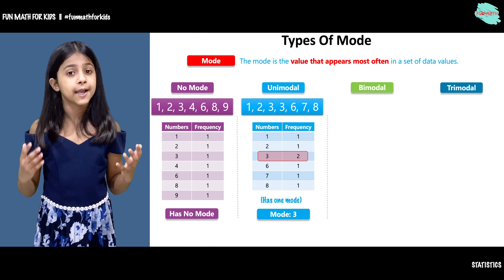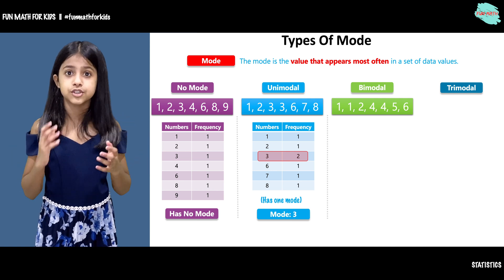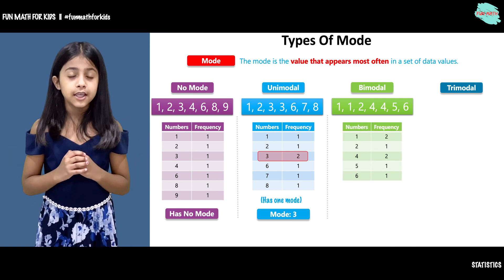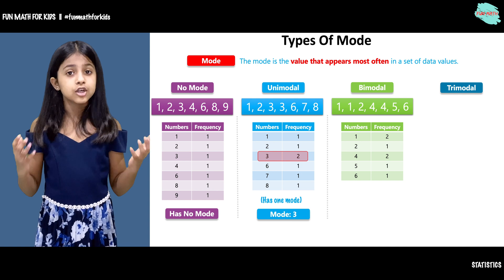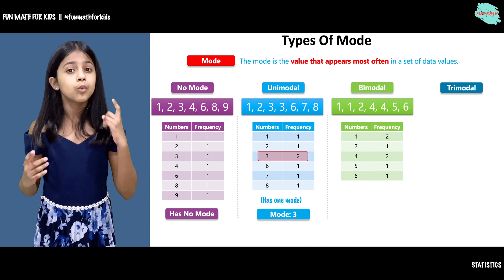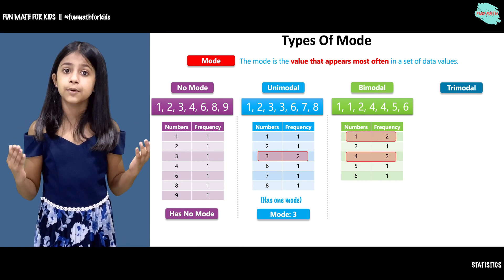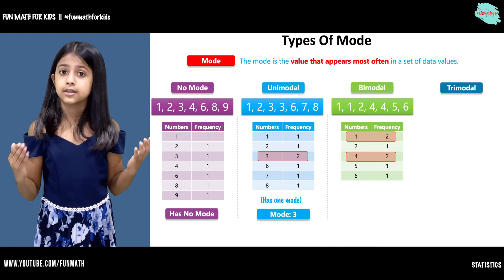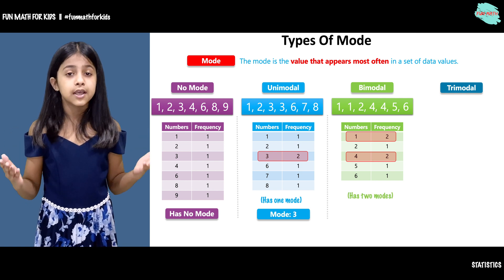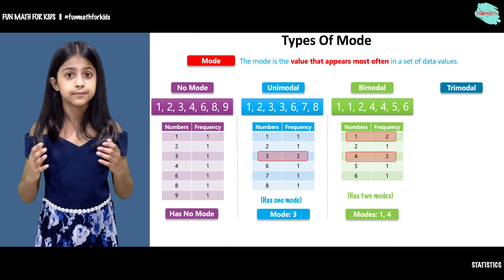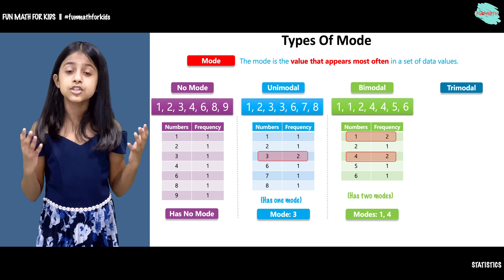Let's move on and talk about bimodal. Here we have a data set with numbers 1, 1, 2, 4, 4, 5, and 6. Here we have a frequency table. 1 and 4 have appeared twice and all the other numbers have appeared once. So what is the mode here? It is 1 and 4, because those two numbers have appeared most often in this data set. That is why this data set has two modes — 1 and 4. Since this data set has two modes, it is called bimodal.